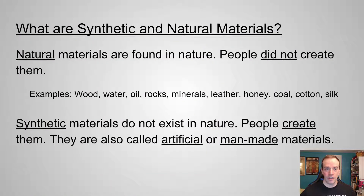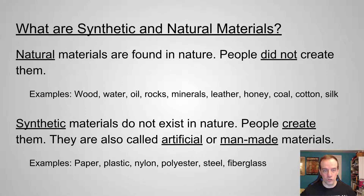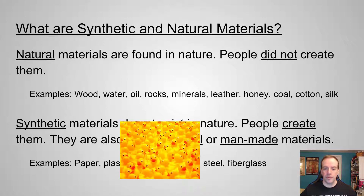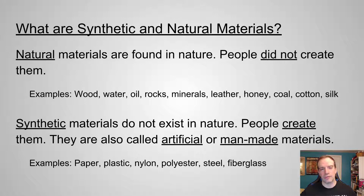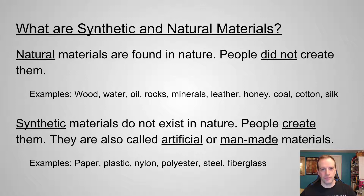Examples of synthetic things include plastics, polyester, and even steel, which won't exist in nature — that's an alloy created by people. So much of what we use in our everyday lives, from the pencils and pens you have in class, to paper — that is a synthetic material. It's made somewhere in a factory by people, through a certain set of processes.